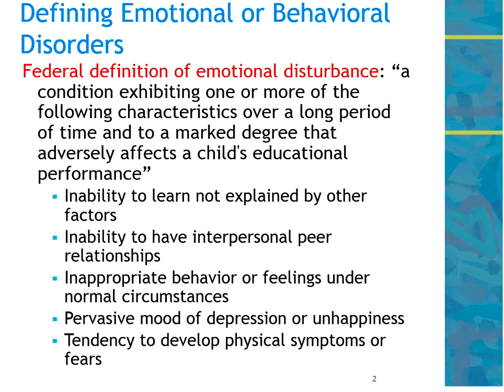Inability to have interpersonal peer relationships — can't get along with anybody or can't make friends. This is very common in EBD. Inappropriate behavior, behavior inappropriate to the age and to the situation. And then the last two have to do with internalized behaviors: a pervasive mood of depression or unhappiness — the kid is always that way, hard to get them out of the funk they're in — and a tendency to develop fears and physical symptoms.